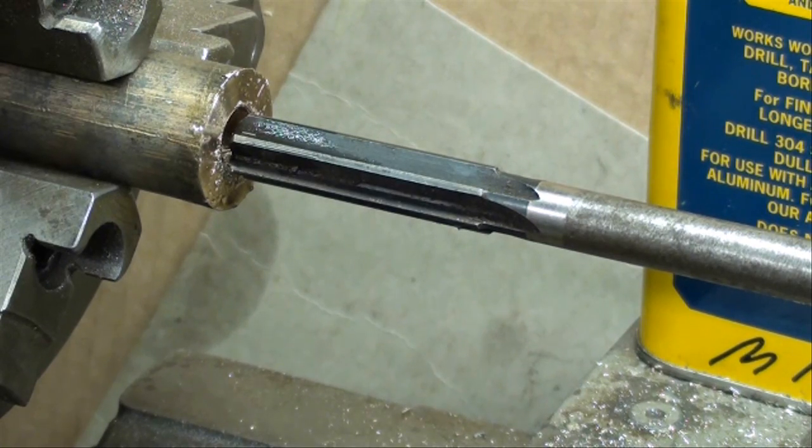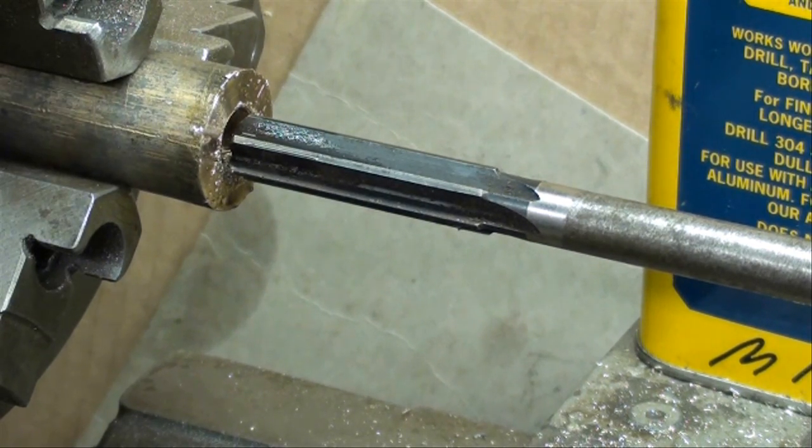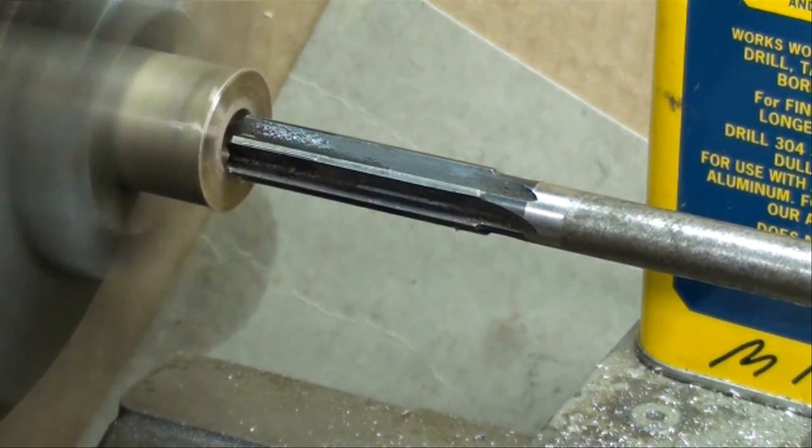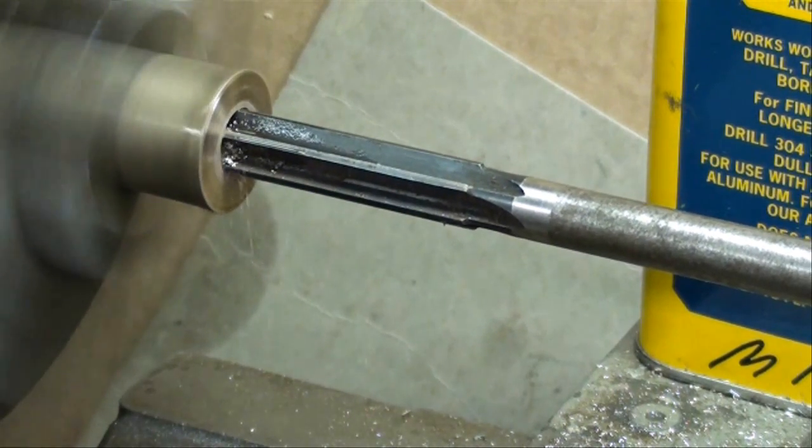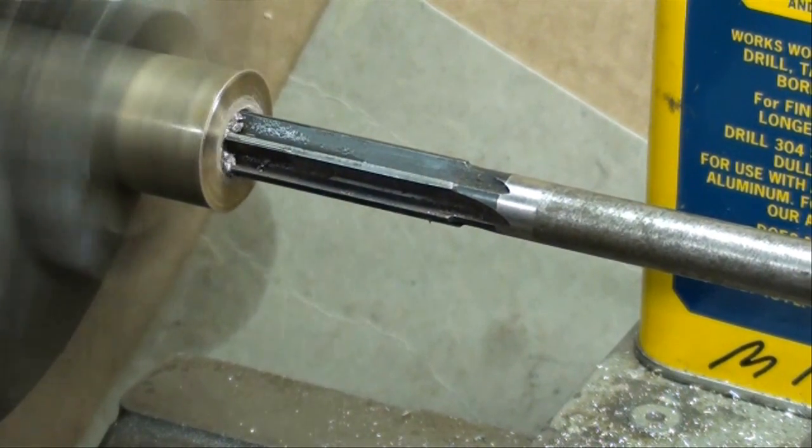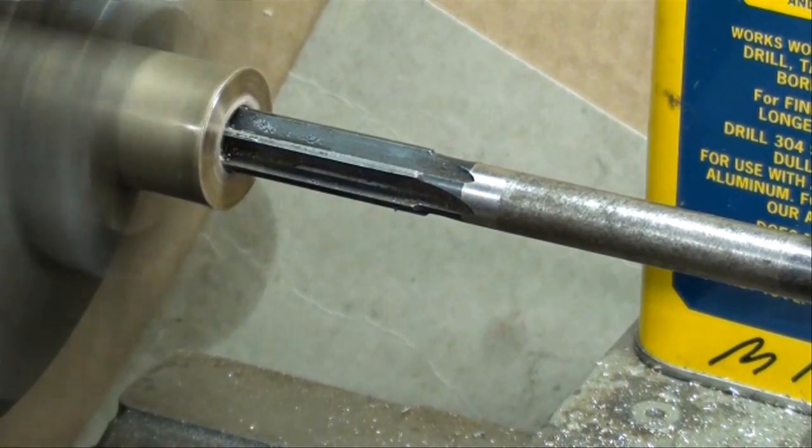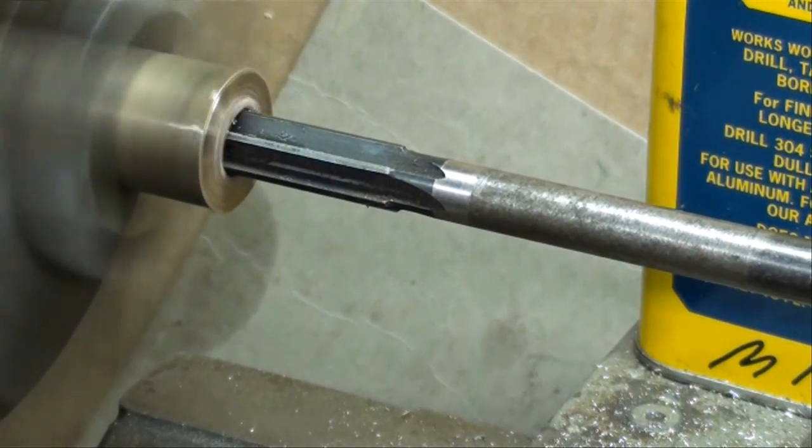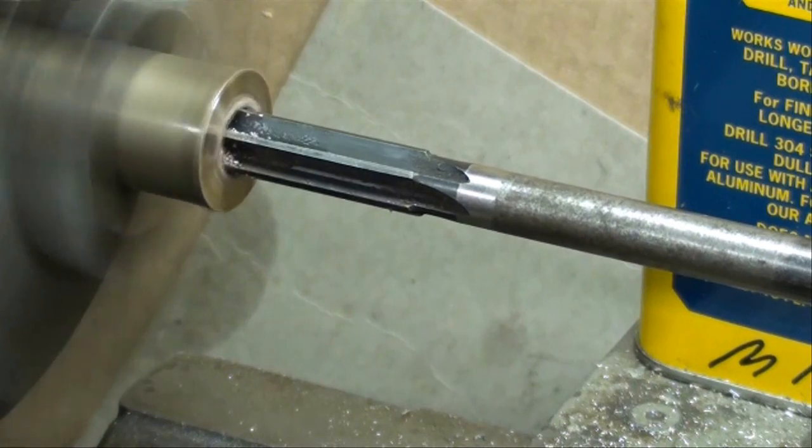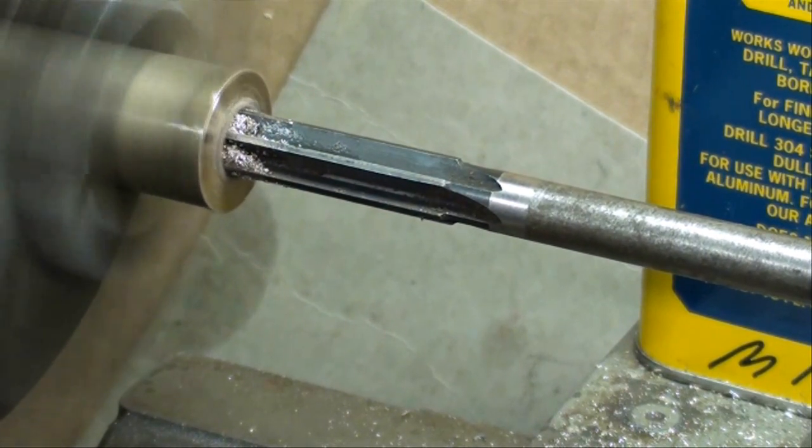This chucking reamer is held in a three-jaw chuck. I already put some Mystic Metal mover on there, and I'm just going to slowly feed it in as if I was drilling a hole. Remember, I'm taking off about a 32nd of an inch. We'll back it off, and you'll see that there's chips on there.